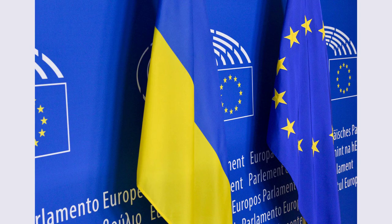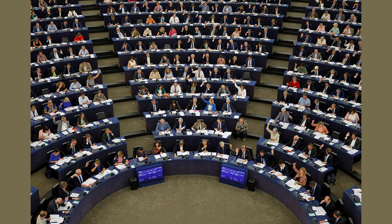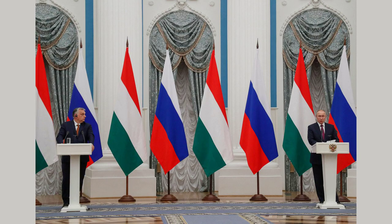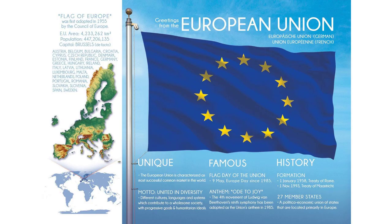Welcome, ladies and gentlemen, to this captivating exploration of the history of the European Union integration. The European Union, often referred to as the EU, is a political and economic union of 27 member states located primarily in Europe. Its origins can be traced back to the aftermath of World War II, a time when Europe was ravaged by devastation and divided by deep-seated conflicts. In the wake of this destruction, visionary leaders emerged with a bold idea to create a united Europe where peace and prosperity would prevail. Join us as we uncover the key events, treaties, and milestones that led to the formation of the European Union as we know it today.